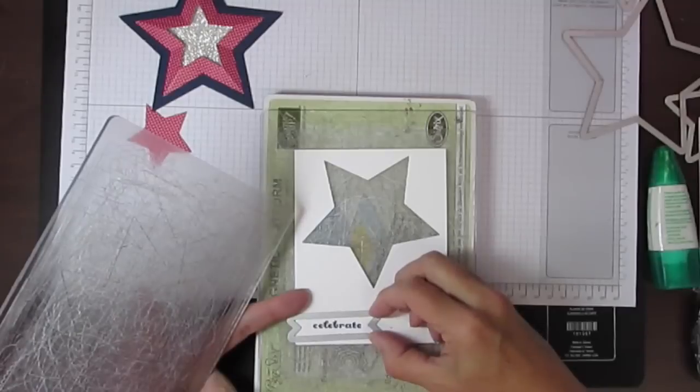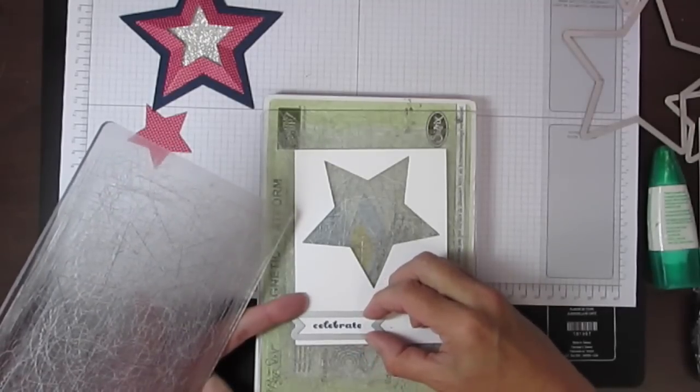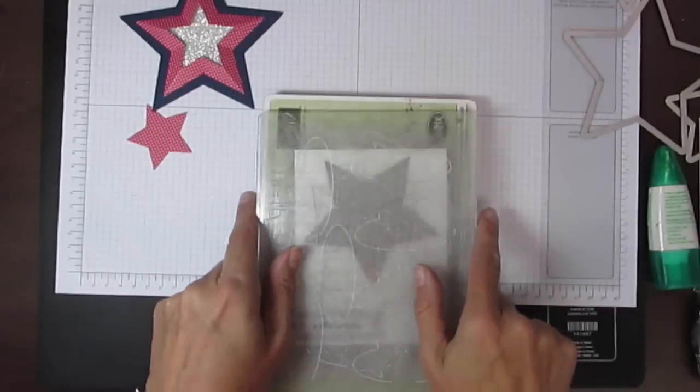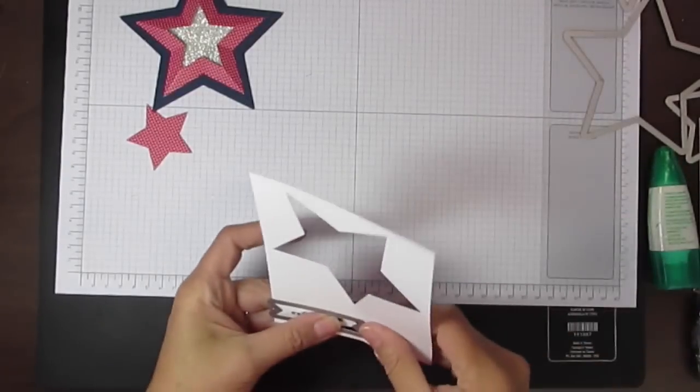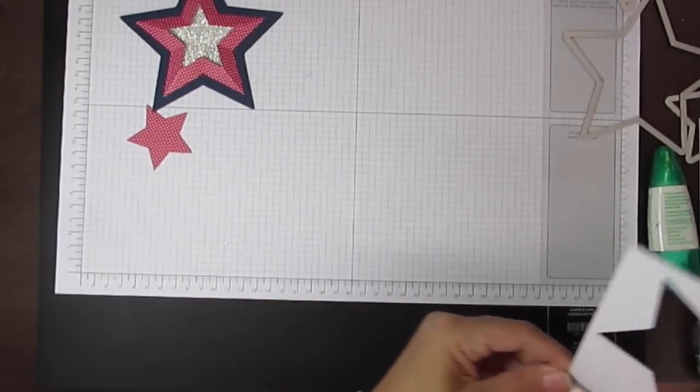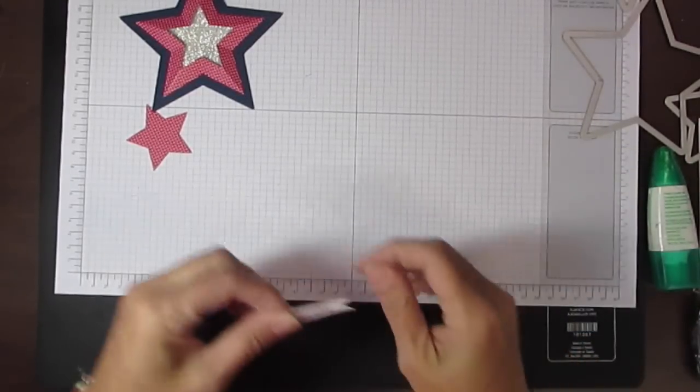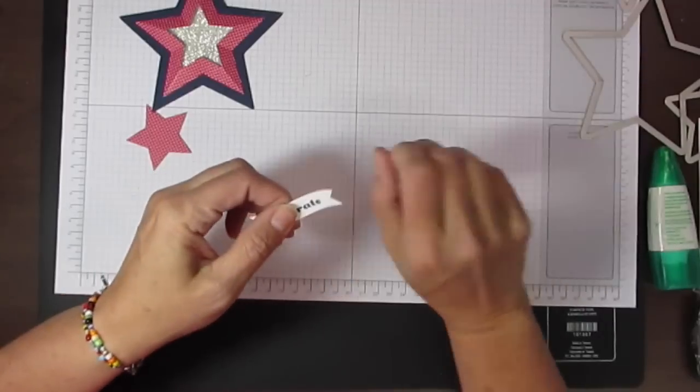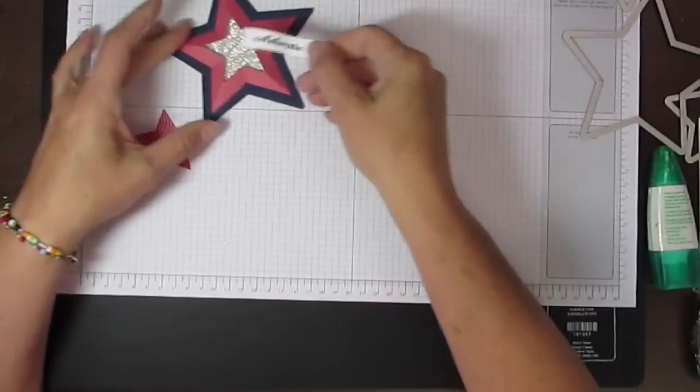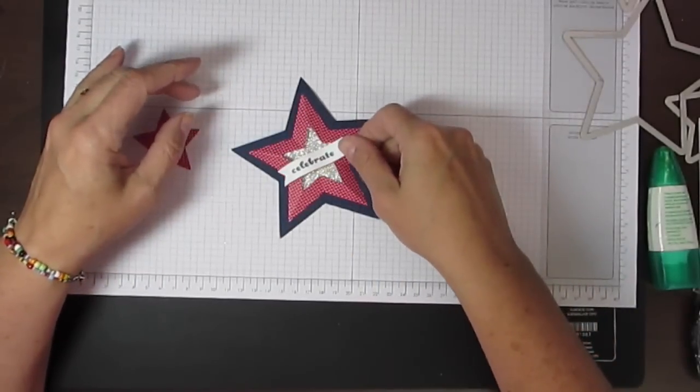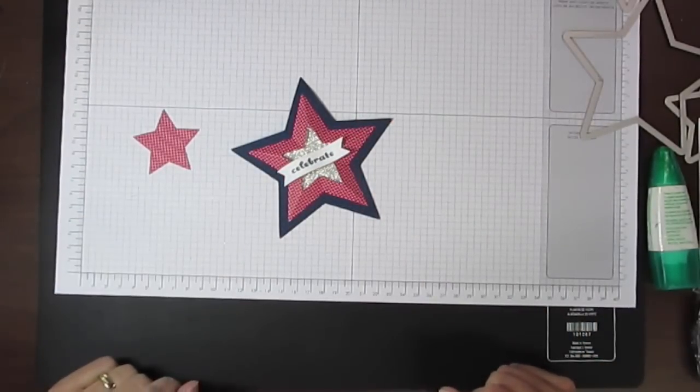Using the Bitty Banners, I stamp that celebrate and I'm going to run that through the big shot. That's done—that's going to come out of there. I've got this great banner. I just curl the edges; it kind of gives my banner a little wave to it. I'm going to add this right to the middle of my cardstock with a little piece of dimensional.